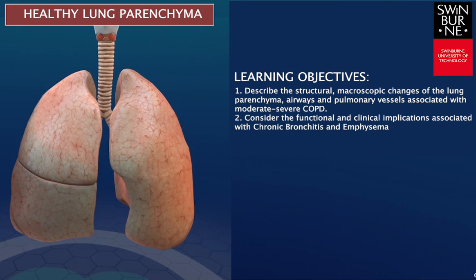In chronic bronchitis we see inflammation of the bronchi and increased mucus production. With emphysema there is destruction in lung parenchyma and permanent enlargement of the air spaces, whereas in asthma there is a hyper-responsiveness of the airways resulting in narrowing and accordingly increased mucus production.